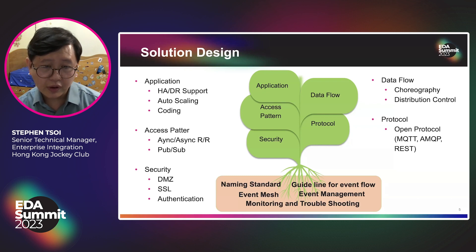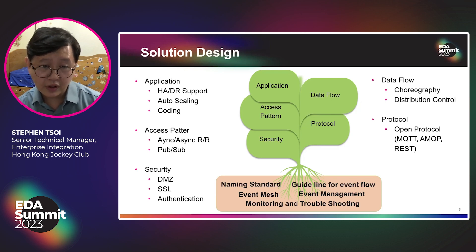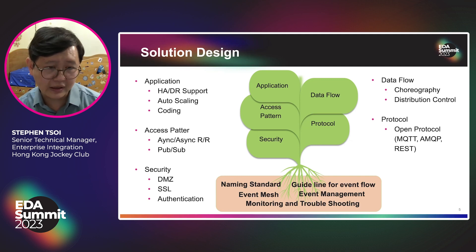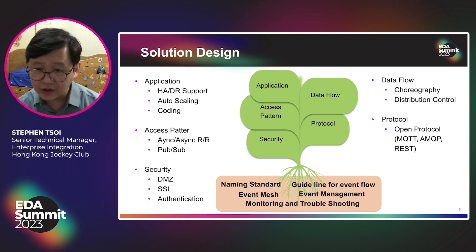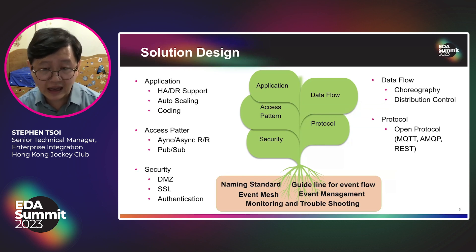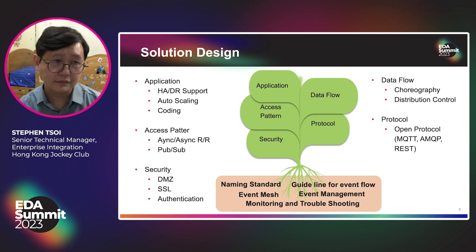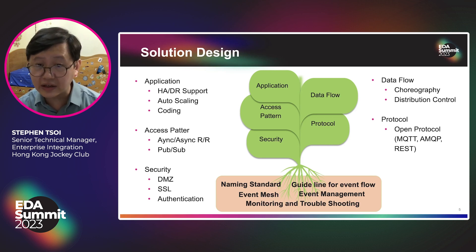For example, an exclusive queue can be used for the active-standby design; a non-exclusive queue will be used for the fan-out case. Additionally, we also need to guide the development team to design a multi-threaded framework to handle thousands of messages per second. Secondly, you need to follow the naming standard and the event flow control guidelines. To define your event flow, please remember you need to use the parser to implement the asynchronous request-reply. I strongly suggest that you use a lightweight open protocol such as MQTT to decrease the message size and avoid vendor lock-in.